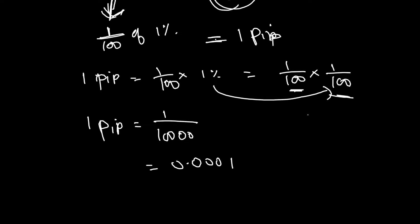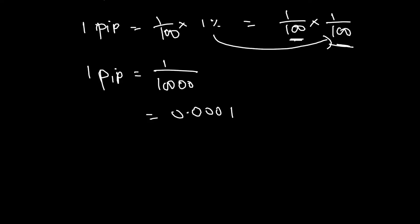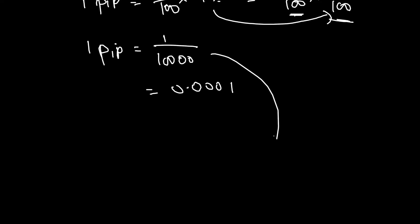Now, if I say 5 PIPs, then it will be 5 by 10,000. So, that will be 0.0005.